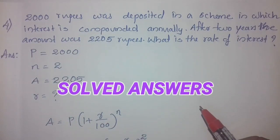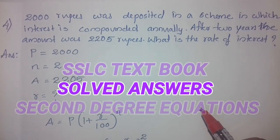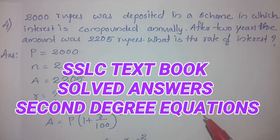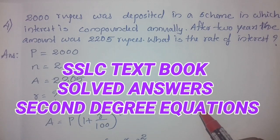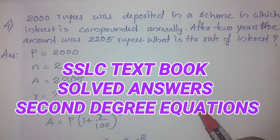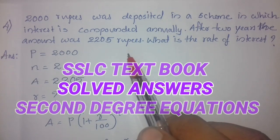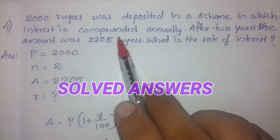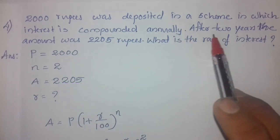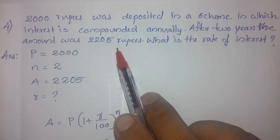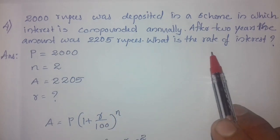Namaskarum. Welcome to our YouTube channel. In this video, I am going to do a problem from the chapter of 2nd degree equations in the textbook, page number 89. The problem is: 4000 rupees was deposited in a scheme in which the interest is compounded annually. After 2 years, the amount was 2205 rupees. What is the rate of interest?